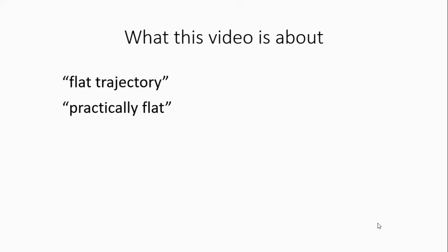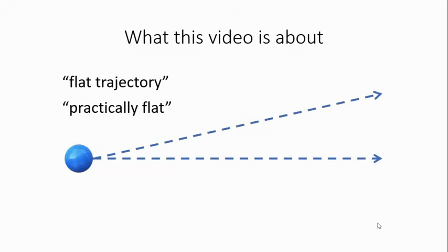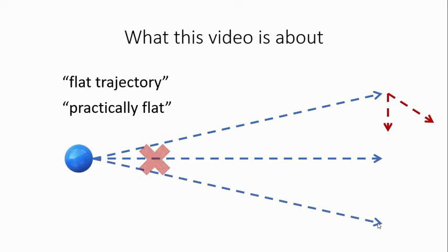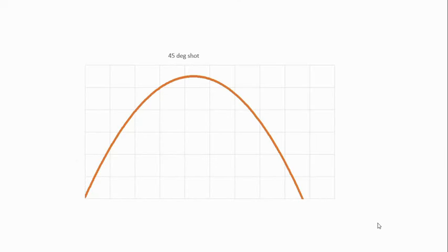To put it humorously: if a trajectory is flat like this, or like this, or like this, then how does the ammo fall to the ground like this or like this? Of course it does not work that way. Rather, one of the trajectories — for example, the one of the 45-degree shot — might look something like this: completely curvy.